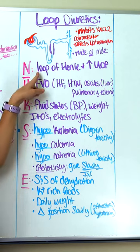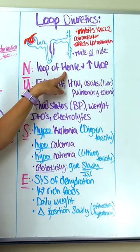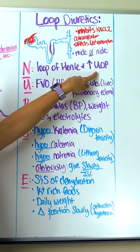Let's talk about loop diuretics. Just as their name says, they work on the loop of Henle within that nephron and they increase urinary output.